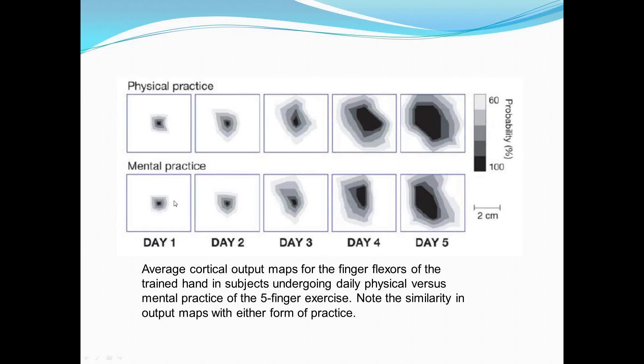But in here, on this side, we had another group of people who did not actually physically do the five-finger exercise. They knew the actions — they had done them before — but instead of physically practicing, they very directly, calmly, and with attention imagined themselves doing the five-finger exercise for the same duration that people were actually doing the physical practice. And what you see is something quite remarkable: the response and the kind of muscle-memory-ish thing is very, very similar between the physical practice and the mental practice.